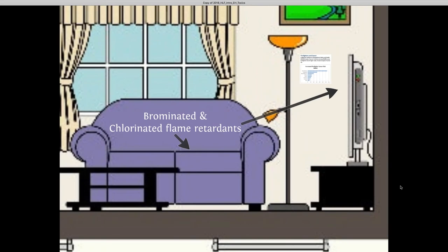Flame retardants are chemicals that are ubiquitous in our home environment. They're added to products to give them flame retardant properties — they're supposed to make them less flammable. There are actually a lot of studies showing that they're almost completely ineffective. Many different halogenated flame retardants — those with a chlorine or bromine molecule — are considered to be carcinogens, mutagens, reproductive and developmental toxicants, neurotoxicants, and endocrine disruptors.